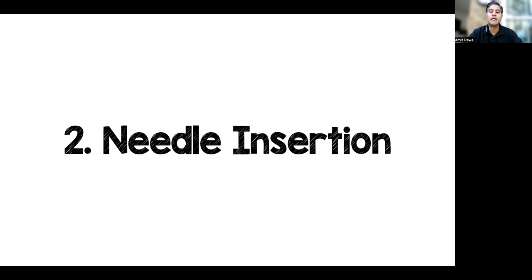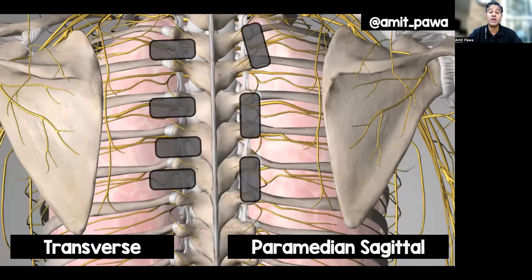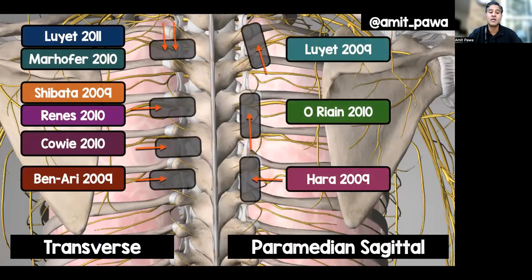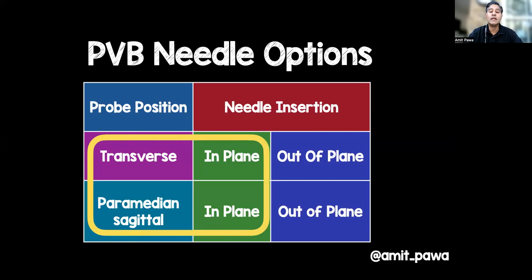Now let's talk about needle insertion. There are a number of approaches: either a transverse probe orientation or a paramedian sagittal probe orientation, and then you can needle in-plane or out-of-plane. My personal preference is in-plane needling.